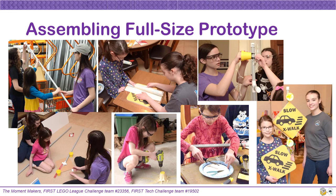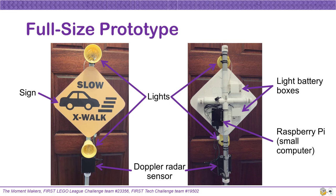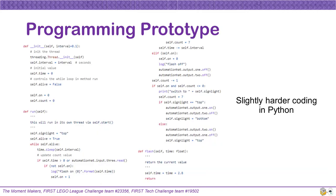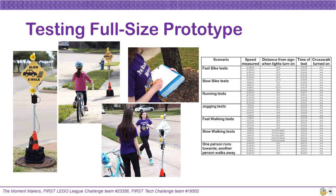Returning our attention back to building our full-size prototype, we needed to select materials, make measurements and cuts, paint, drill, and even learn how to solder wires. Our full-size prototype consisted of a sign that we designed, two lights, a Doppler radar sensor, and a small Raspberry Pi computer to control it. Programming the Raspberry Pi was slightly harder because we used the Python programming language, which most of us were not familiar with. Still, it was very doable for us kids and a great way to learn a new programming language. After we had our full-size prototype fully programmed, we had to test it. We tested running, walking, and biking toward it at different speeds. It was so exciting to see our prototype working.